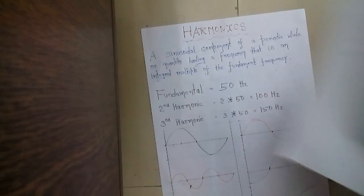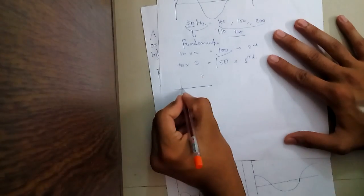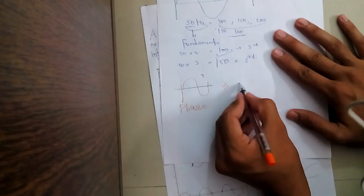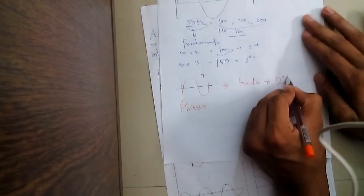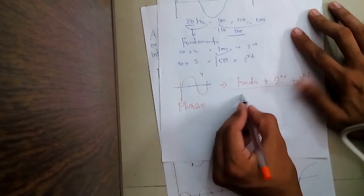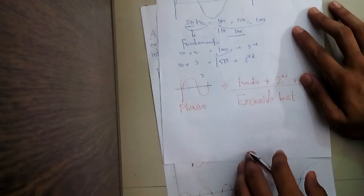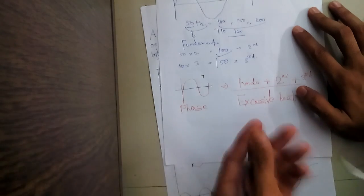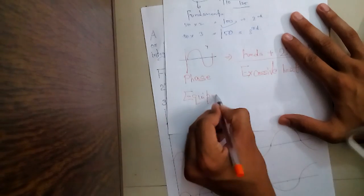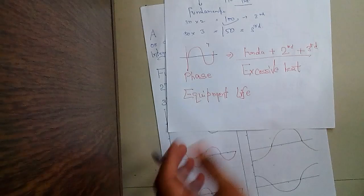You can understand that in the phase wire I am giving a normal sinusoidal waveform, but in the return wire I am getting fundamental plus second plus third harmonics. These things will cause excessive heat in my neutral current. We will understand how these things heat up the neutral wire in further lectures. Also, due to all these things and excessive heat, the life of the equipment will reduce — equipment life will deteriorate. There will also be stress in the cables.